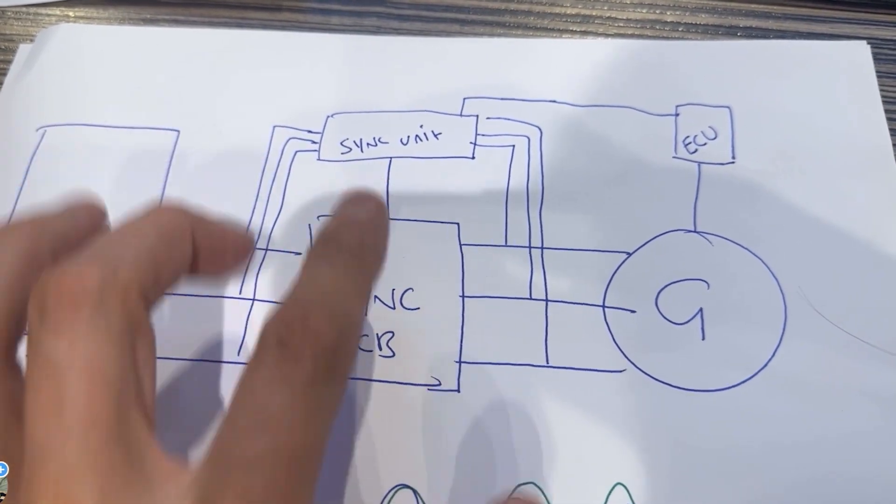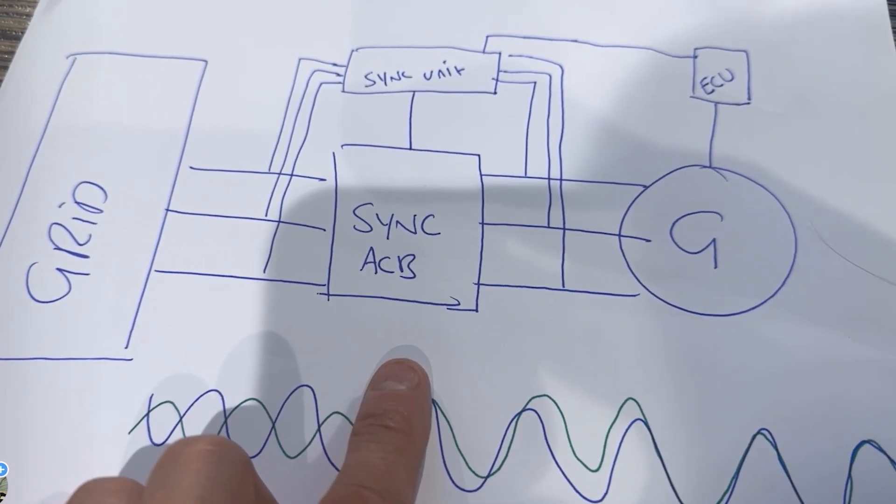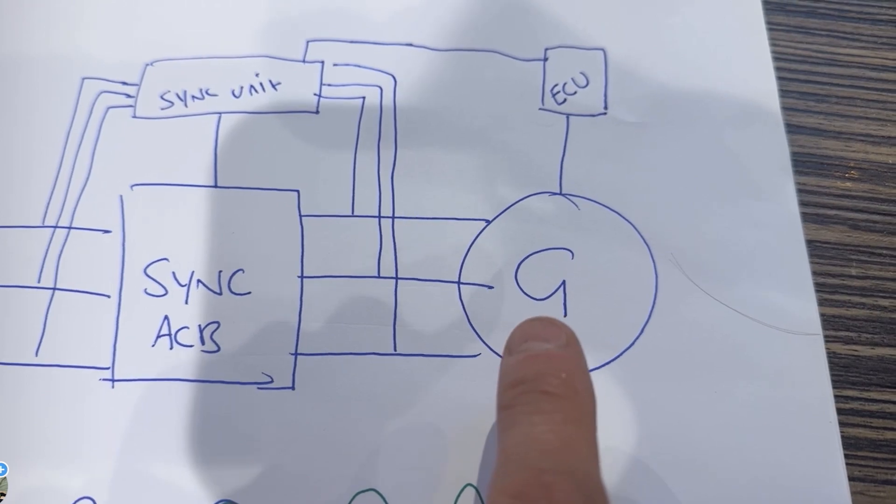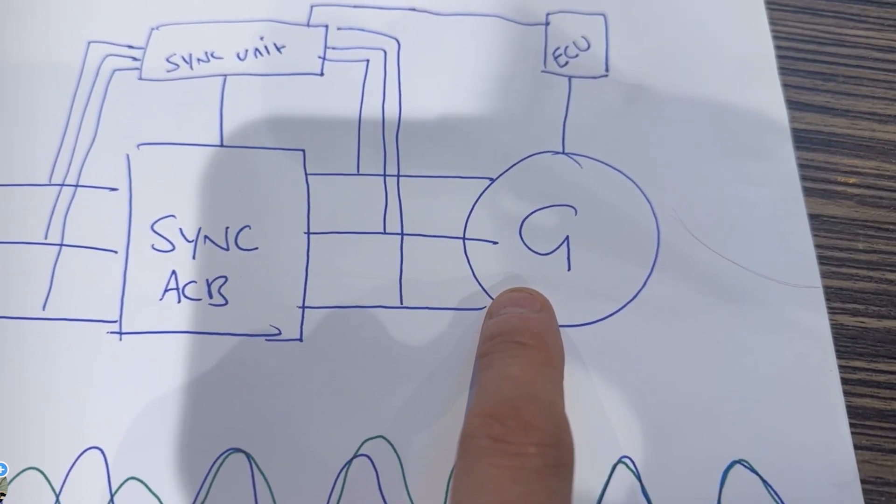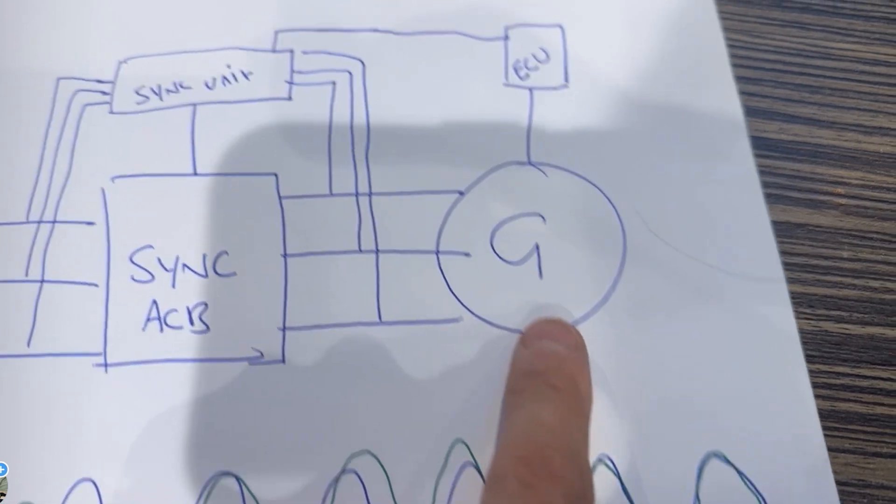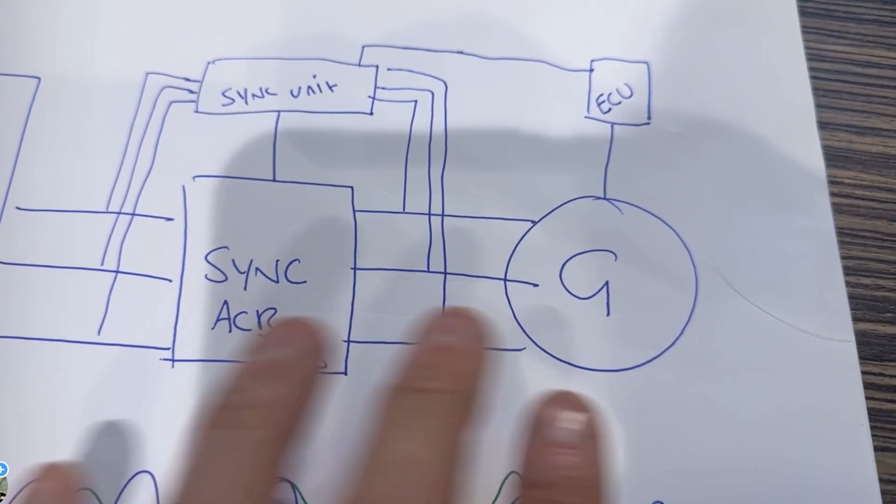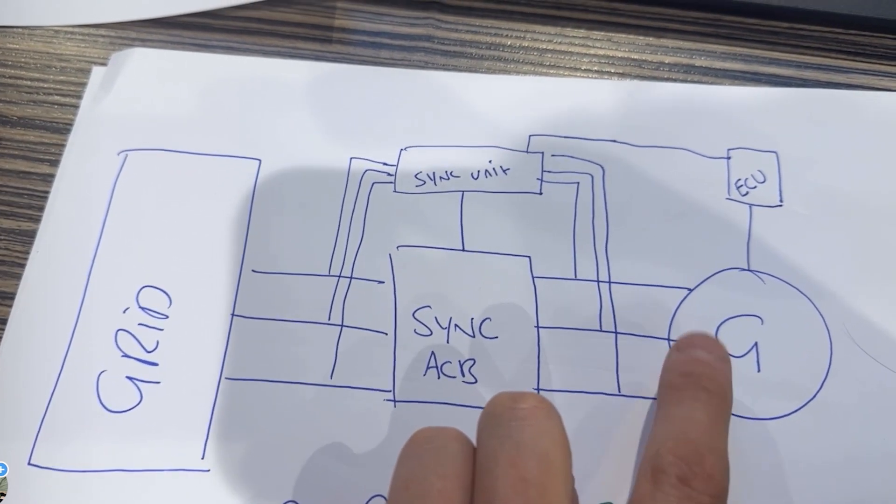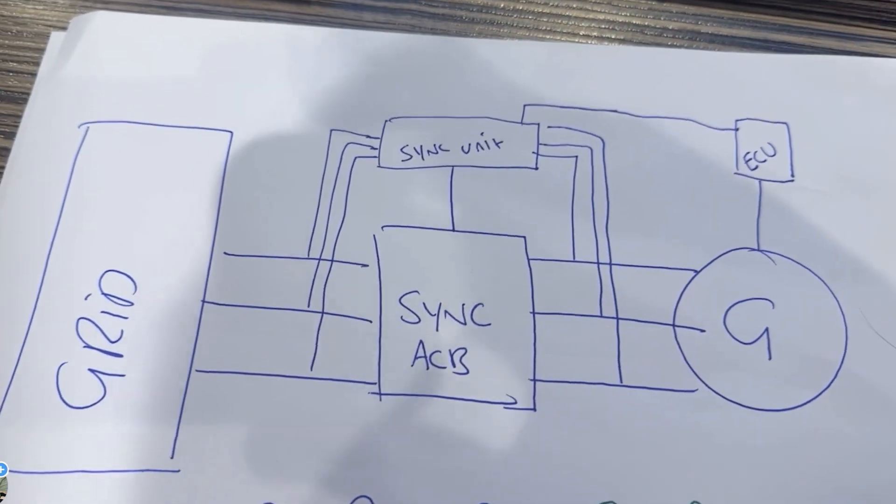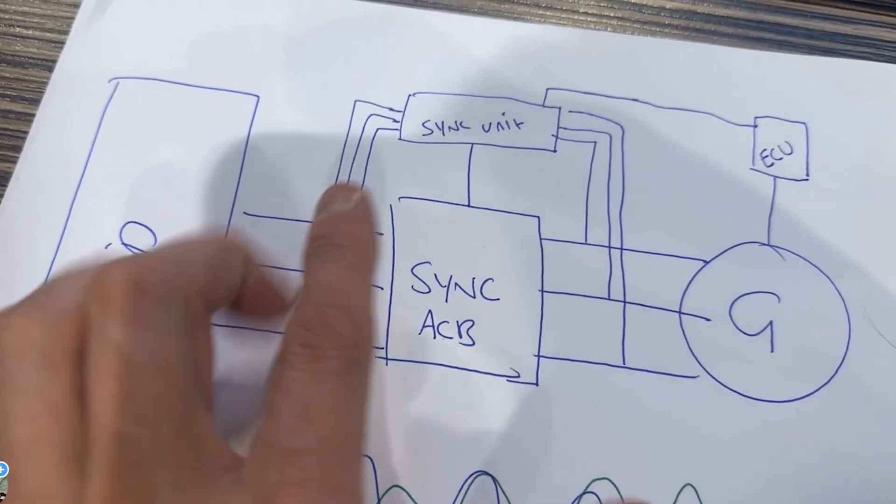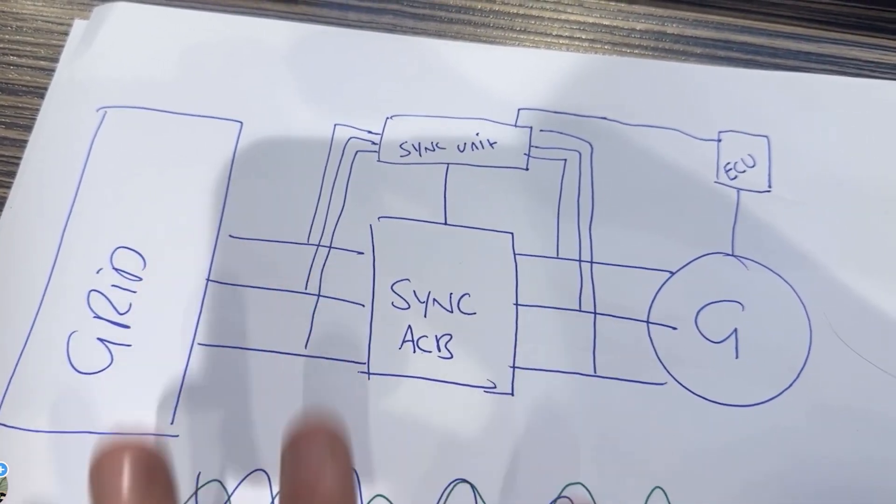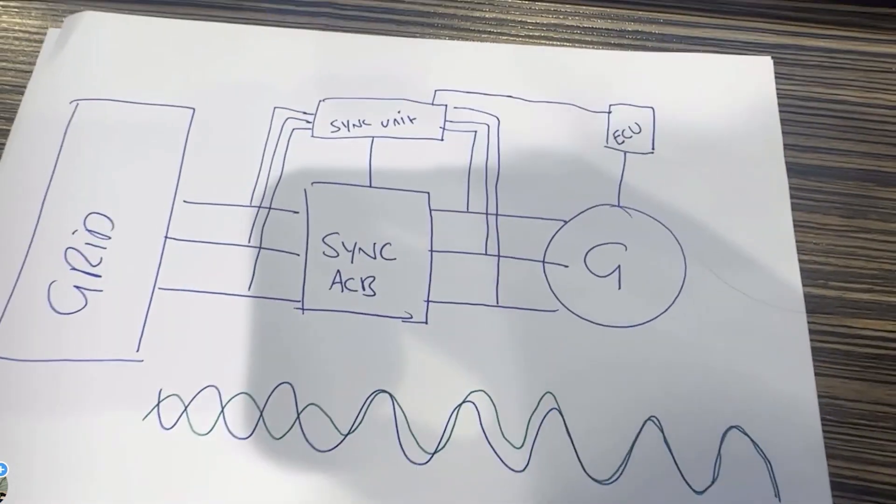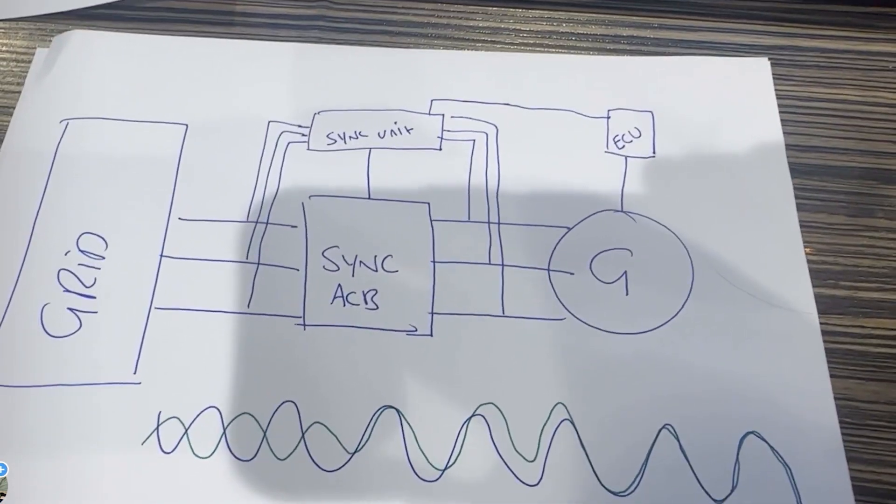But if something mad happens like you take the generator away and put one back and it's going backwards, the sync unit will just see that and go no there's something wrong. If the grid tries to move the generator, the sync unit will see that and know there's something wrong. This saves loads of different components but now it's an overall package. So that's when I refer to sync breakers, that's what I'm on about. It doesn't have to be a motor, it could be a solar farm I'm guessing. You still got to sync it. It could be a steam generator, a gas generator, turbine, anything.